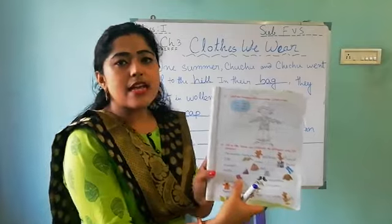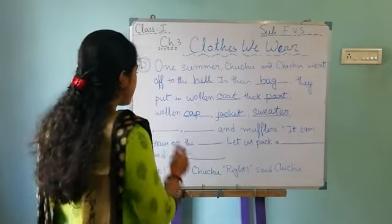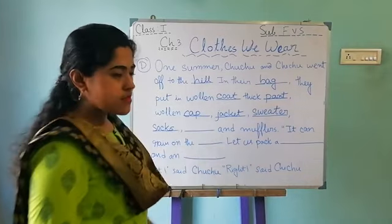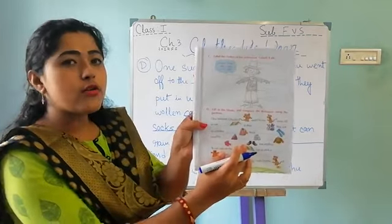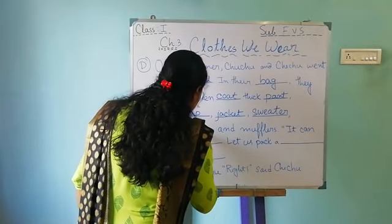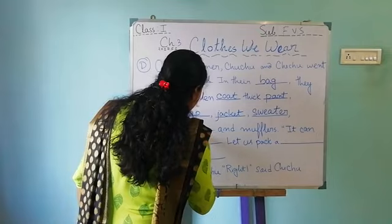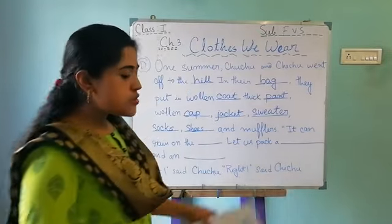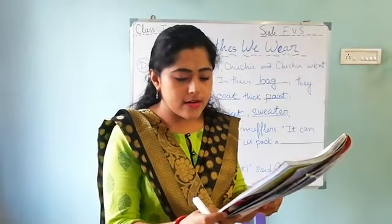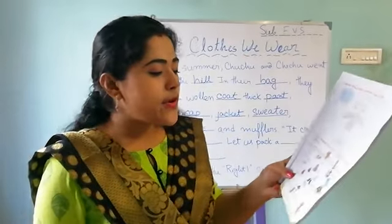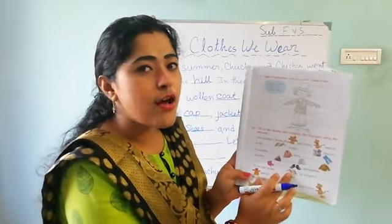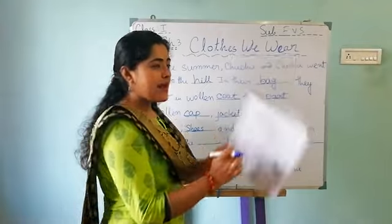Next, there is a picture of socks, so you have to write there S-O-C-K-S — 'socks'. Okay, next, look — there is a picture of shoes after socks. So you have to write here 'shoes'. Next, and 'mufflers' — okay, this is already written. It can rain on the — there is a picture of a hill — so you have to write here 'on the hill'.